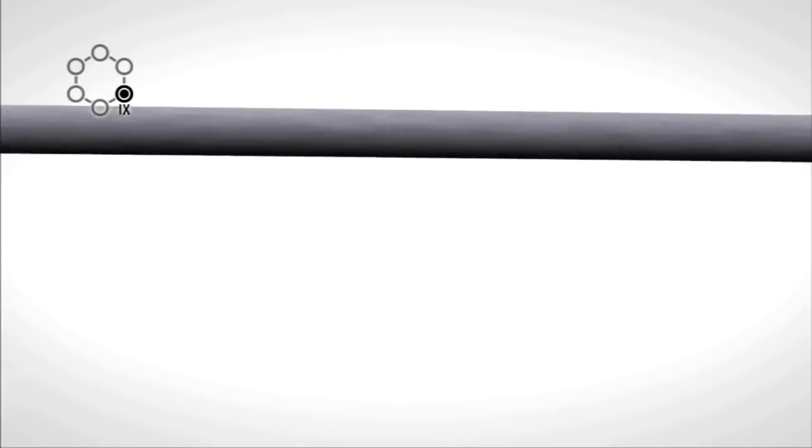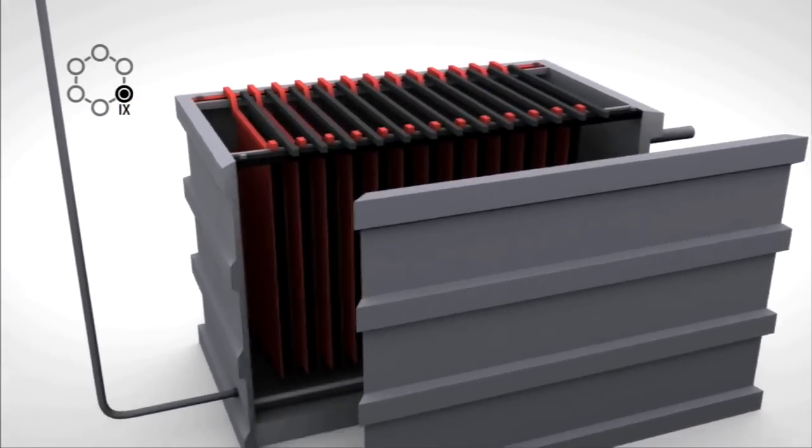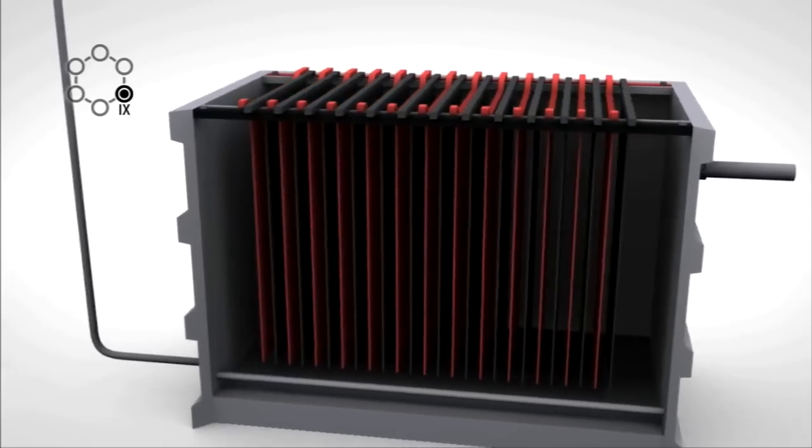The pure nickel sulfate solution is sent to a typical electrowinning cell, where, similar to the Barrier Bay process, the nickel metal is plated onto the cathodes.